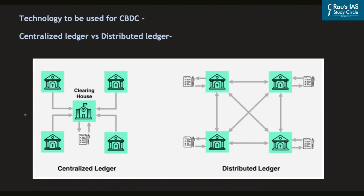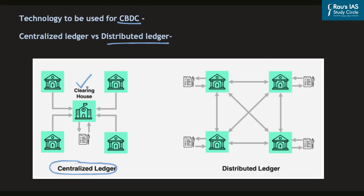What kind of technology will be used for central bank digital currencies? Blockchain technology, used by cryptocurrencies, is likely to be used. But first, let us understand what blockchain technology and distributed ledger technology are, and how they differ from existing centralized database systems. A ledger is simply a way of keeping records of accounts. Presently, a centralized database or centralized ledger system is used, in which a central clearing house has the authority of approving any kind of transaction.